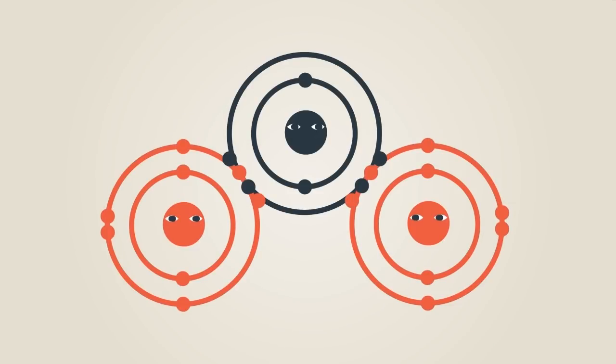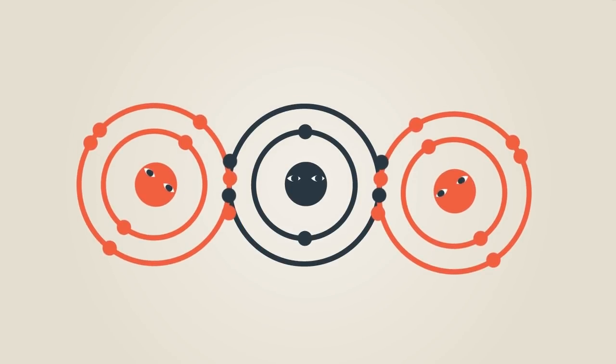The two groups of bonding electrons in carbon dioxide repel each other, and this keeps the oxygen atoms as far away from each other as possible. Because of this, we can say that the carbon dioxide bond angle is 180 degrees.